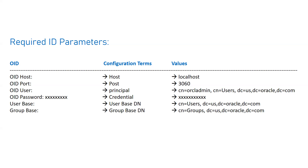The second parameter is the OID port. Each service runs on a particular port, and the LDAP/OID server is no exception. The default port for OID is 3060. In my local machine it is running on port 3060, so in the Port configuration field you specify the port number of your OID — in my case, the default value of 3060.